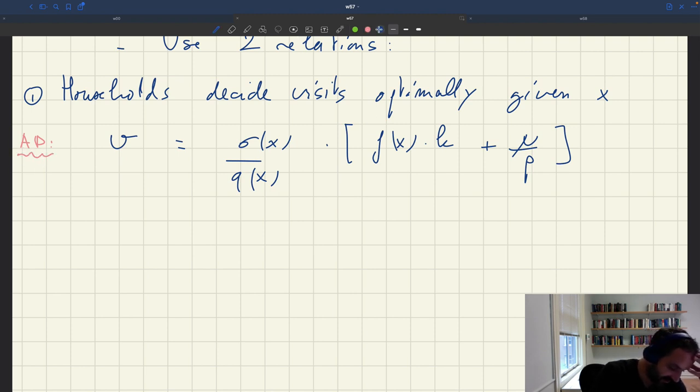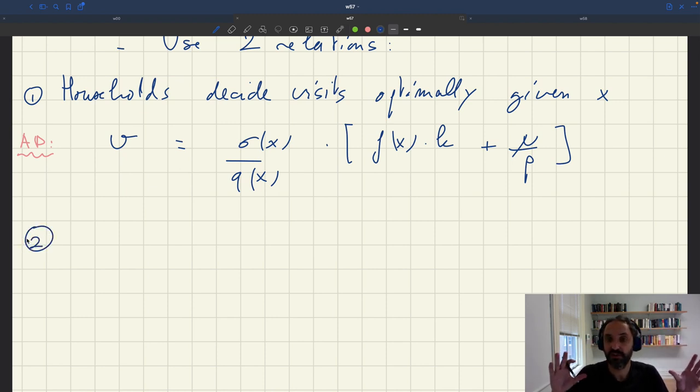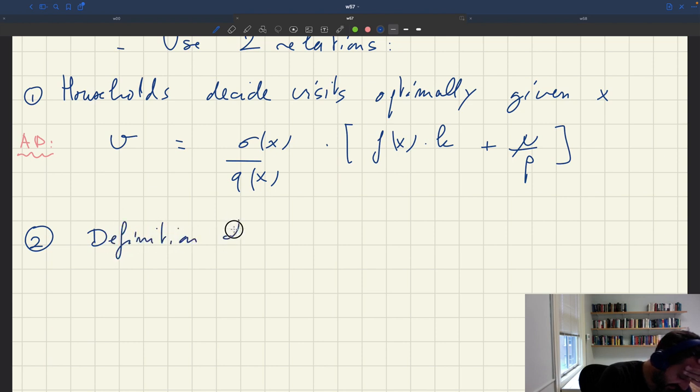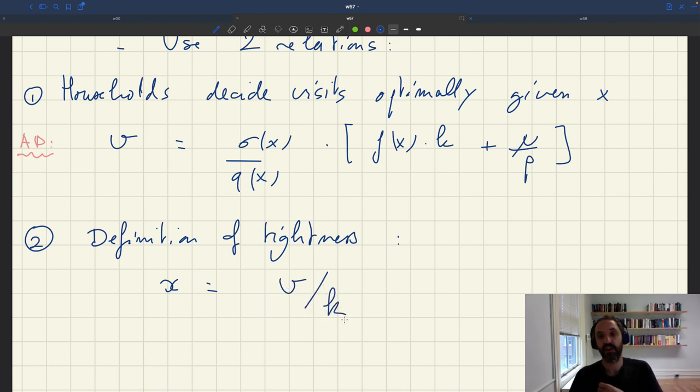Then we have a second relationship which says that once we have this total number of visits, that determines actually the tightness of the market. The aggregate tightness of the market is going to be the number of visits divided by the aggregate capacity. So basically, tightness is always a number of buyers, which here is V, divided by number of sellers. So we know that once we have this number of visits, the tightness has to be V over K.